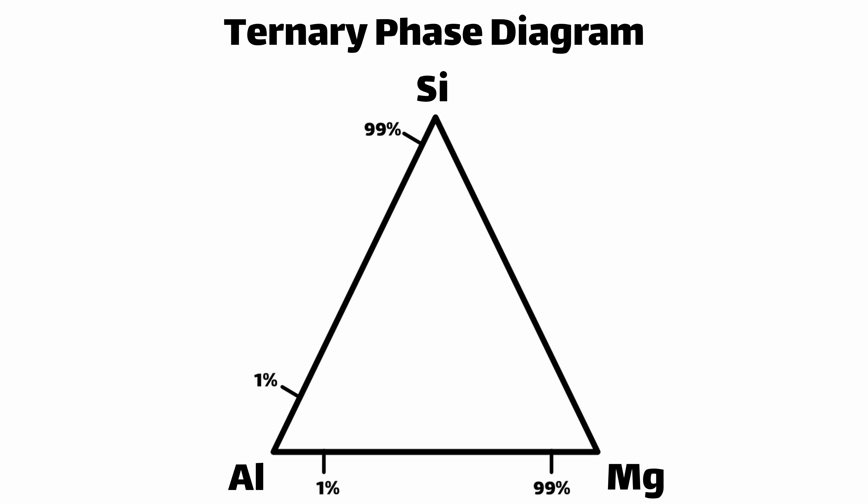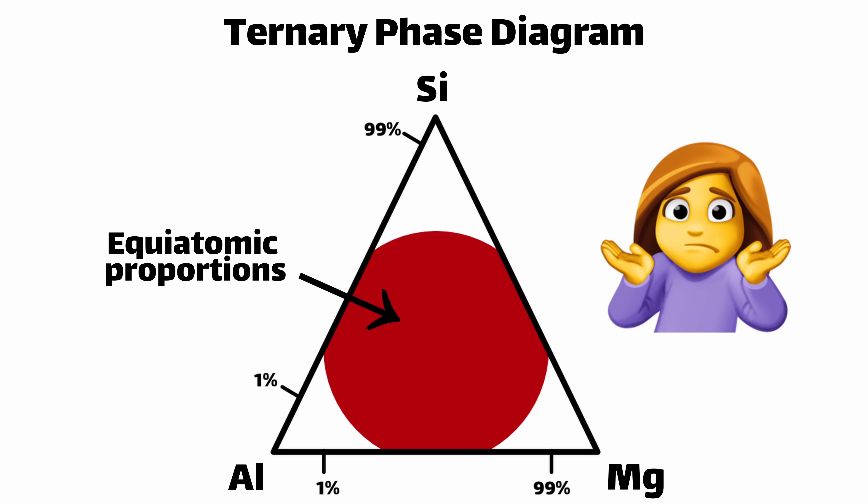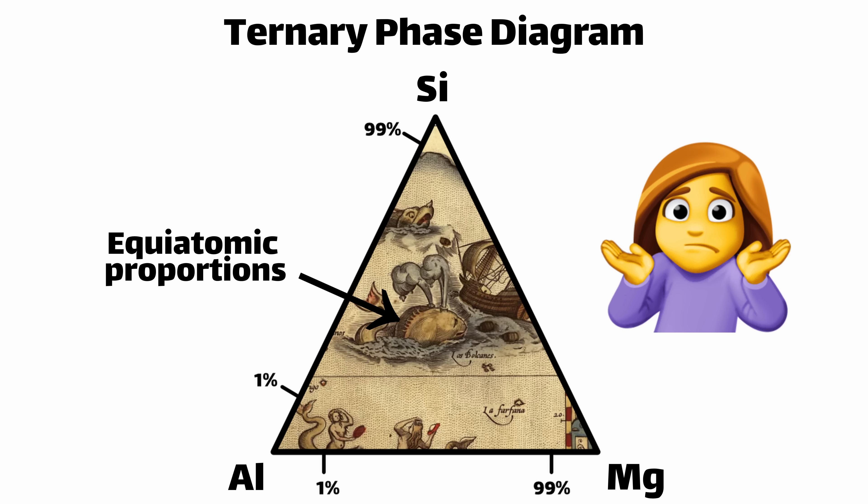The region inside of this phase diagram chart is kind of like the 'here be dragons' on an old map — lots of things can happen there. It's difficult to model and predict, and we generally just avoid it. And that brings us to high entropy alloys.